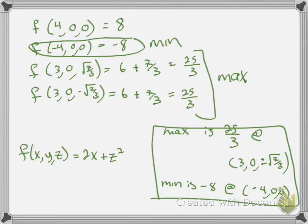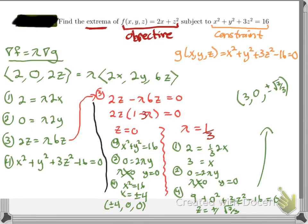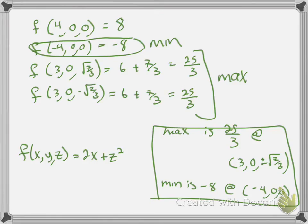Same steps each time — let's review them. First, set gradient of f equal to lambda times gradient of g. Then write out all your equations — in this case we had 4. Solve through the process to get ordered triples; here we ended up with 4. Plug them into your objective: biggest is the max, smallest is the min. And then you get your conclusion.